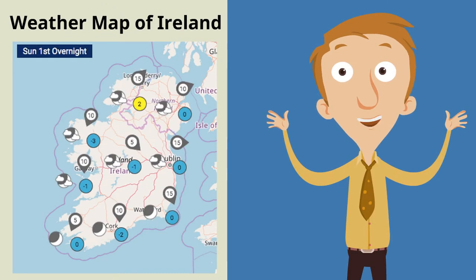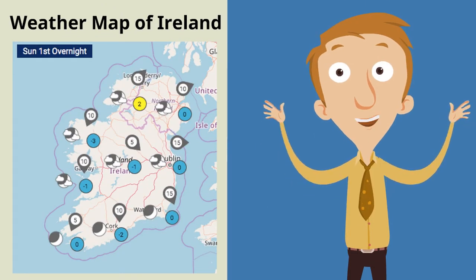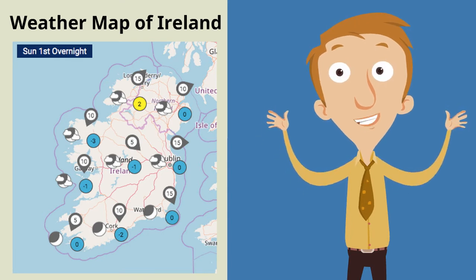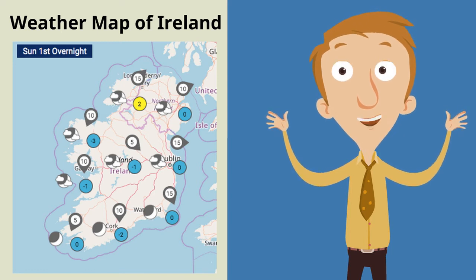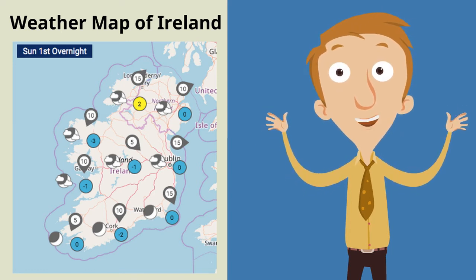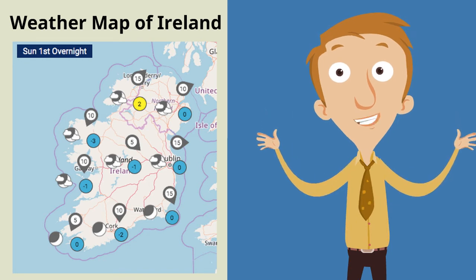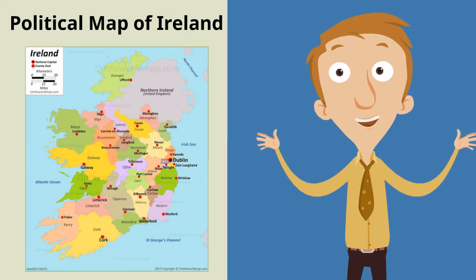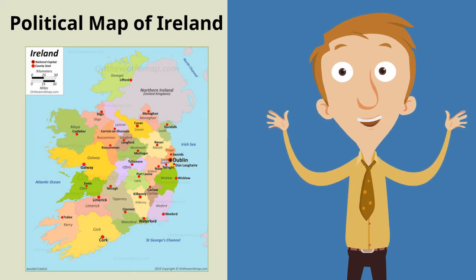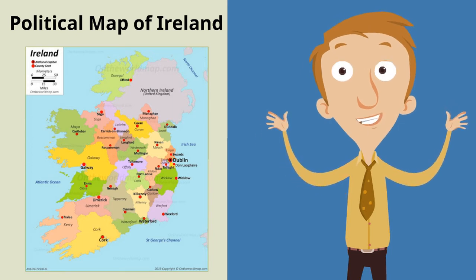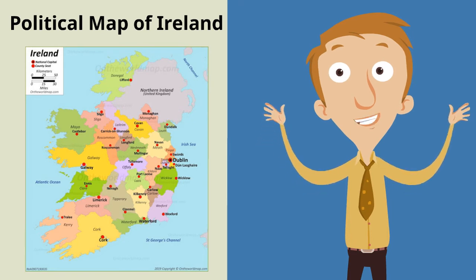Another kind of map that you might have seen before is a weather map. If you've ever watched the weather forecast, you'll have seen this type of map. It tells us the temperature, the wind direction, and the type of weather that different parts of the country will get. The last and probably most common map you would see is a political map. These maps are used to show us the different countries, cities, and, in this case, counties of Ireland.